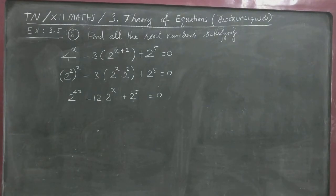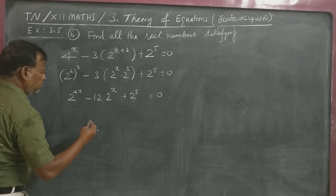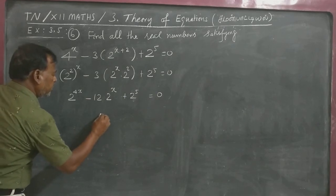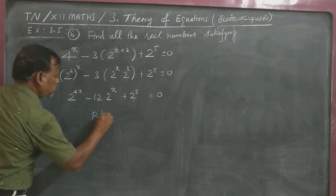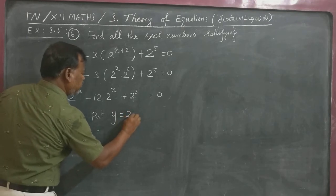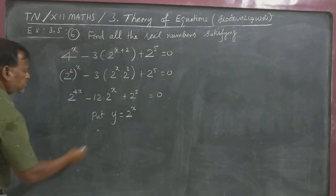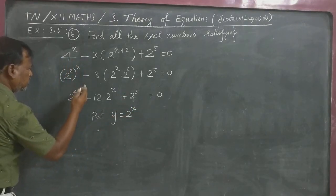Now you can substitute. If I solve by substitution method, you can put Y equal to 2 power X. Now this becomes 2 power X the whole square.